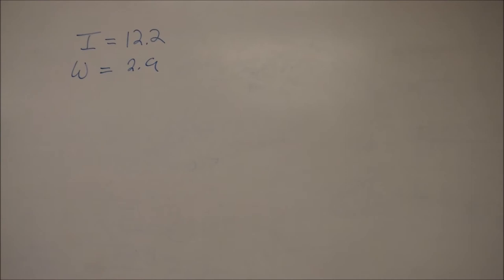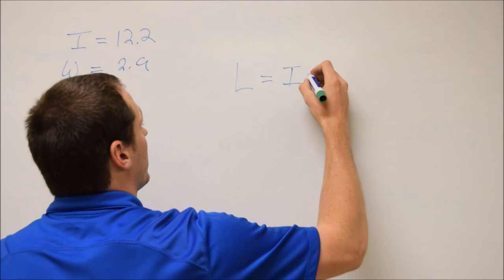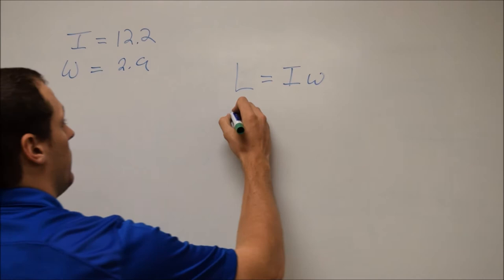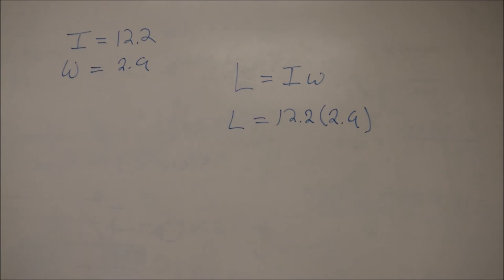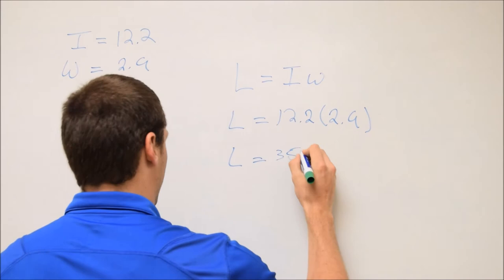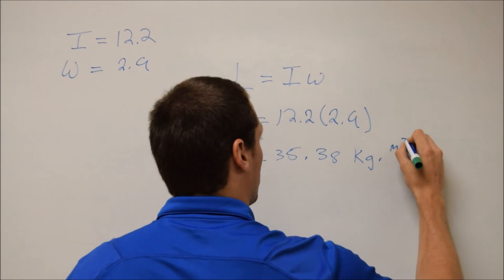So what we need to do is use our formula here to find the angular momentum. So that is going to be the angular momentum is equal to the moment of inertia times the angular velocity. So for the first part here, simple, we have this right here is equal to 12.2 times 2.9. So then that's how we're going to solve for the angular momentum. And then when we do our math here, we just get 35.38. And the units for angular momentum are going to be kilograms times meters squared per second.